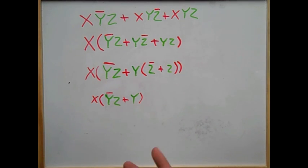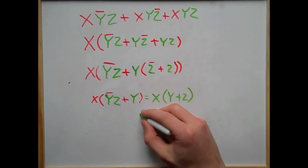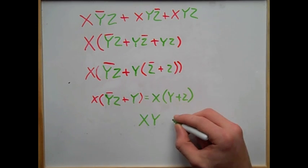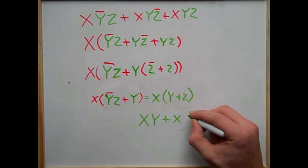And that looks really familiar. Can't quite place my finger on it. Oh, guess what? It's one of our consensus theorems. Oh, I told you those would come in handy. And that's it. We can distribute the x, and we're left with x and y, or x and z.